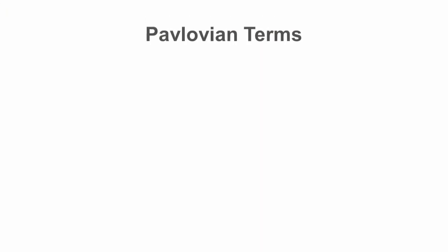Pavlov's early research with dogs was really influential, and eventually this line of research was brought to the USA by a researcher named John Watson, who studied classical conditioning specifically in human participants. Here are a few basic terms of classical conditioning — these are Pavlovian conditioning terms.